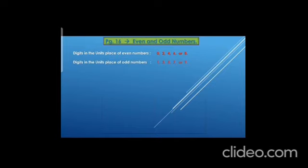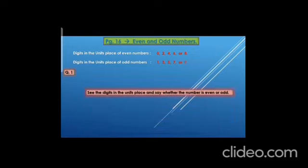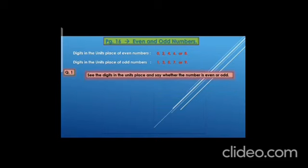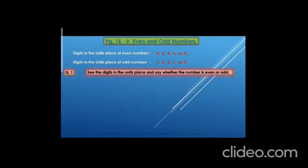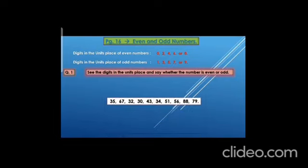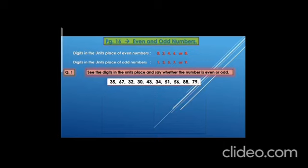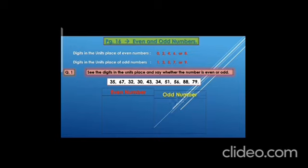Now let us do the question. Question 1: See the digits in the units place and say whether the number is even or odd. The numbers are 35, 67, 32, 30, 43, 34, 51, 56, 88, and 79. You have to see these numbers and tell whether each is an odd number or an even number. For that, we will make a table of even numbers and odd numbers.